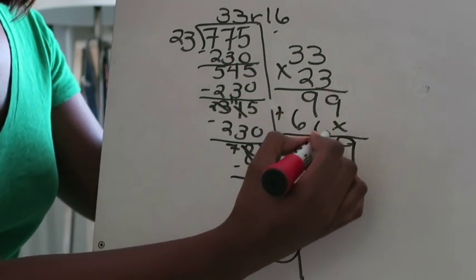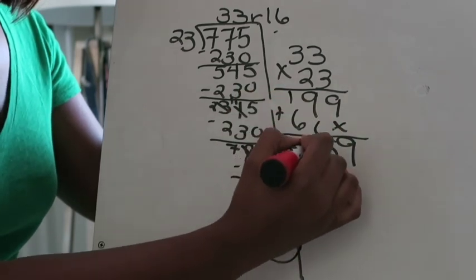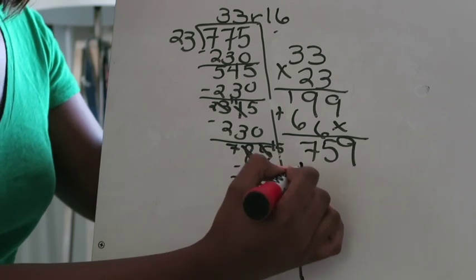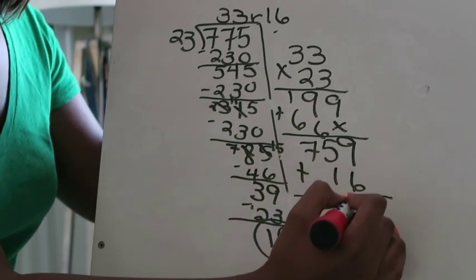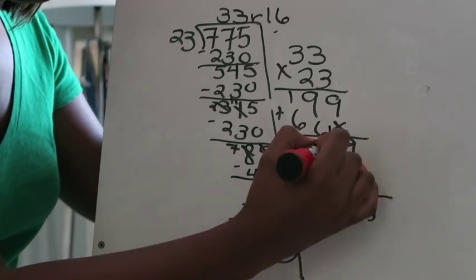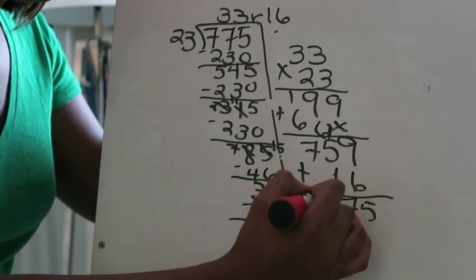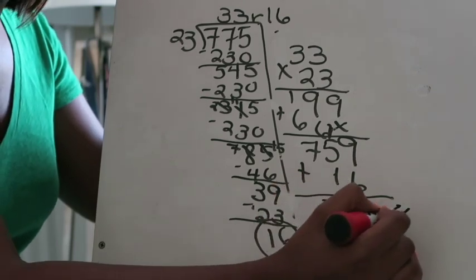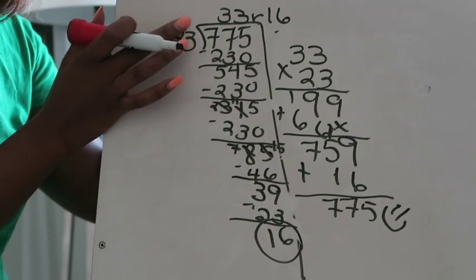Add. You have 9. 9 plus 6 is 15, 6 plus 1 is 7. And you're going to add that remainder of 16. 9 plus 6 is 15, 5 plus 1 is 6 plus 1 is 7, and 7 plus nothing is 7. Smiley face because that matches my dividend so I know I'm correct.